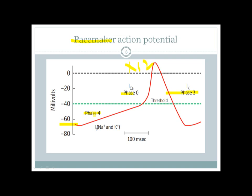Phase four is interesting in pacemaker tissue because it is automatic tissue. Pacemakers have a phase four characterized by influx of sodium and potassium, known as the If or 'funny' current through funny channels, which slowly increases sodium and potassium influx inside the cell until it crosses the threshold for action potential triggering. After crossing the threshold, there is a rapid influx of calcium forming the rapid upstroke, followed by repolarization driven by potassium efflux.